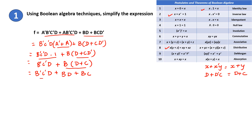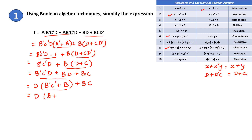Now take these two terms and take B as common, then take D as common. So we get B'C'D plus B, plus BC. By the commutative law, this becomes B plus B'C' plus BC.